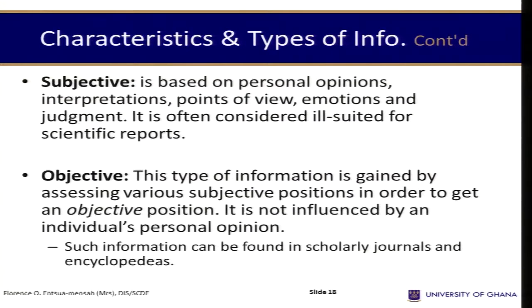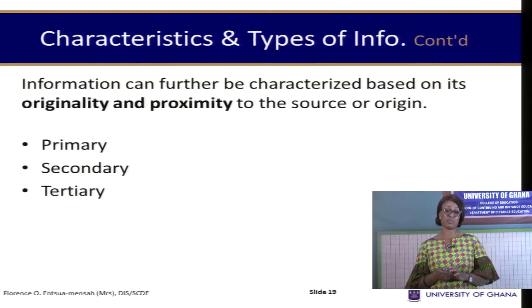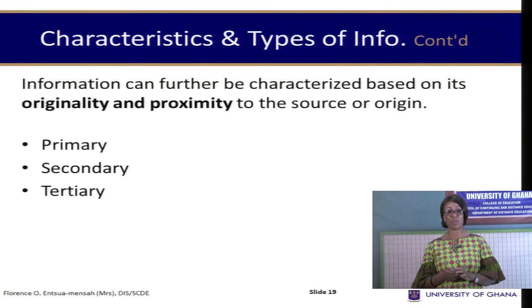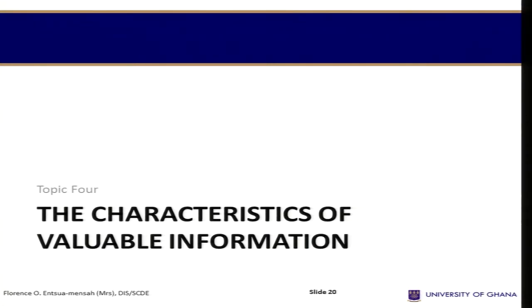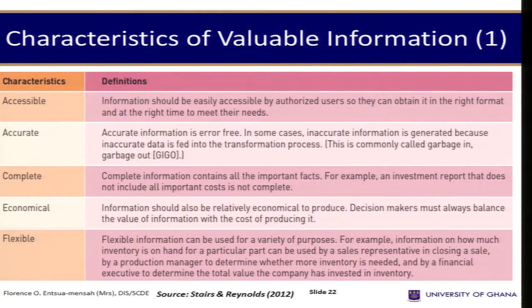We can also characterize information based on originality and proximity. We have three types: primary, secondary, and tertiary. We also talk about how useful information is. If that information is not of value, you may use it to take decisions which you may regret in future. Some of the characteristics of valuable information are: it should be easily accessible by authorized users so they can obtain it in the right format and at the right time. Any piece of information you use to take decisions should be accurate and free of errors. It should also be complete — you have to be very careful when using incomplete information.